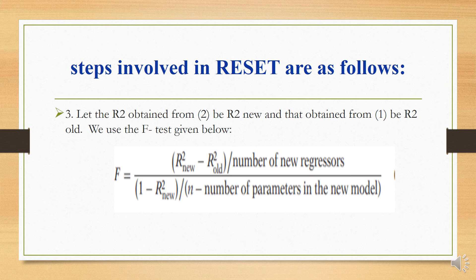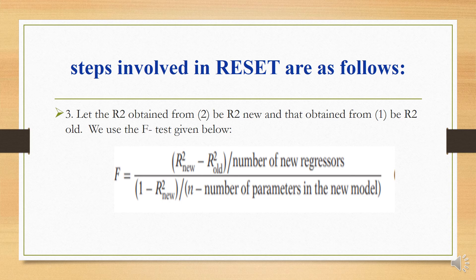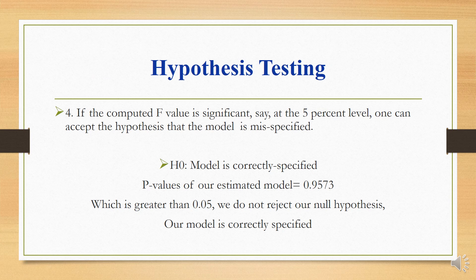Number 3: Let R squared obtained from model 2 be R squared new and that obtained from model 1 be R squared old. We use the F-test that is given below. The F-test equals: R squared new minus R squared old divided by number of new regressors, over 1 minus R squared new divided by n minus number of parameters in the new model.